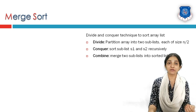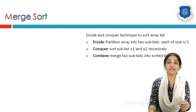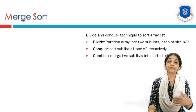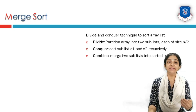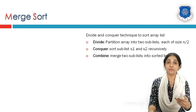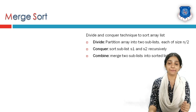In merge sort, division is dividing a list of n elements into sublists of size n/2 each, and sorting takes place in the combine stage. So basically there are two key stages: divide and combine.